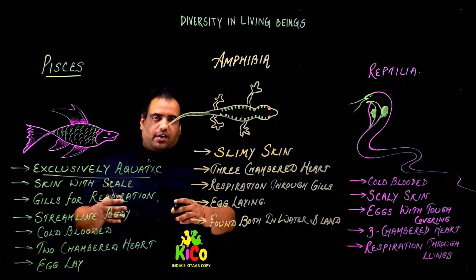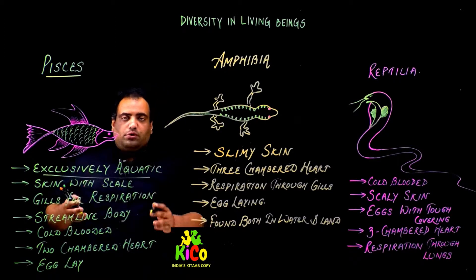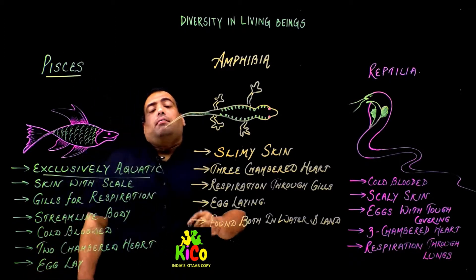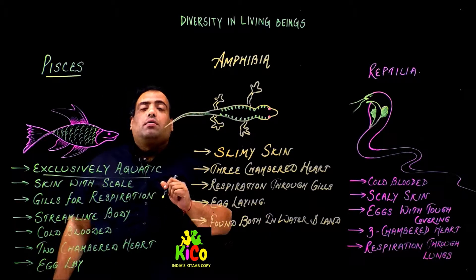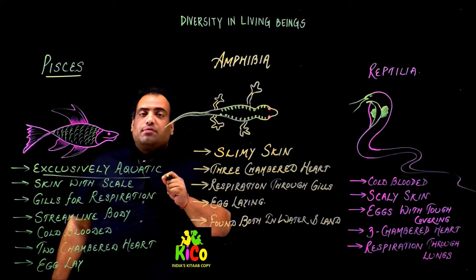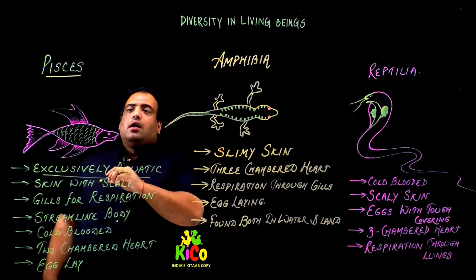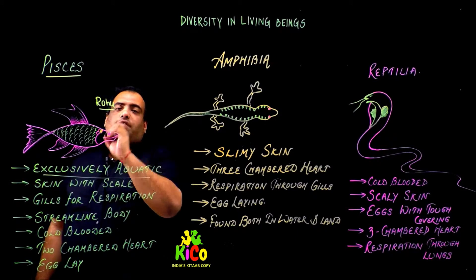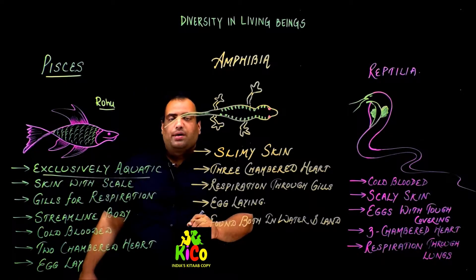The most primitive class is Pisces. In our childhood we heard songs about fish — this is a bird's life, so this is what Rohu fish looks like. Fishes come under this class.